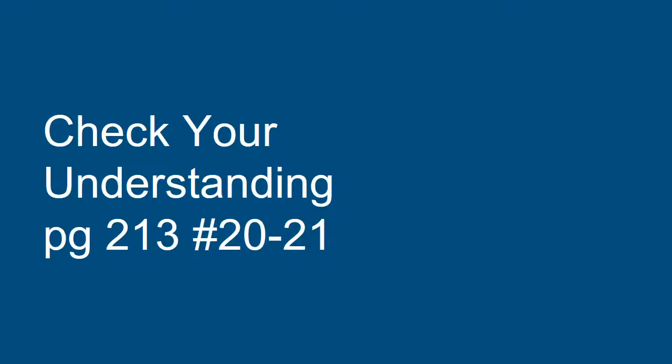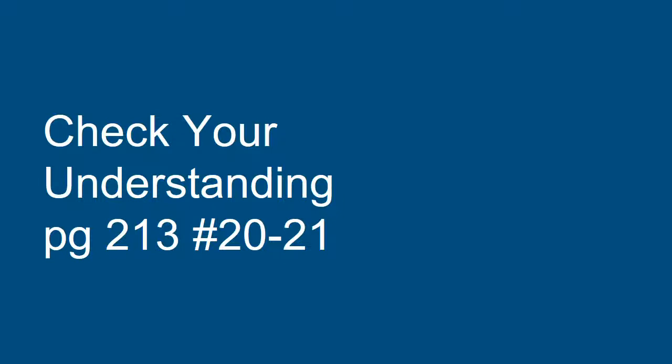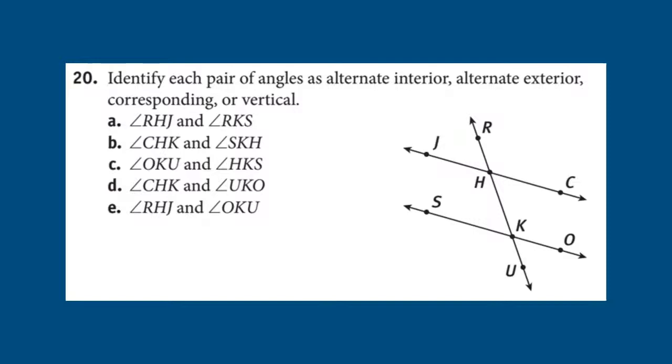And then, some classes we had time to do one of the Check Your Understandings, but I'm going to go ahead and review both, because I think it's just good practice. So, for number 20, it says, identify each pair of angles. And they gave us, you know, five. And we are supposed to label them. So, A, angle RHJ. So, it's really important to know how to find these angles. And I always mark my drawing as I go, so I can figure out which angles I'm talking about. Just a little bit hard to do here on the PowerPoint. So, RHJ and RKS. So, if I'm looking at those, I'm seeing, oh, those are corresponding. They're in the same location at both intersections.